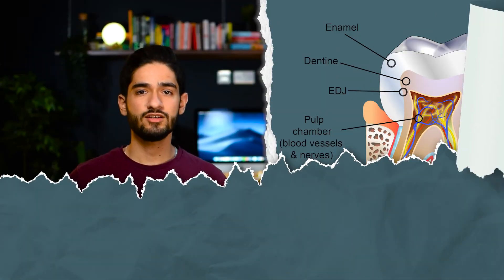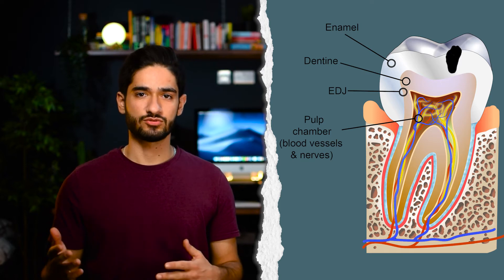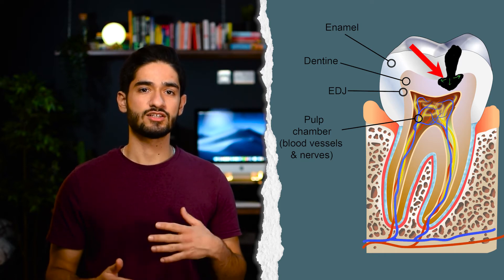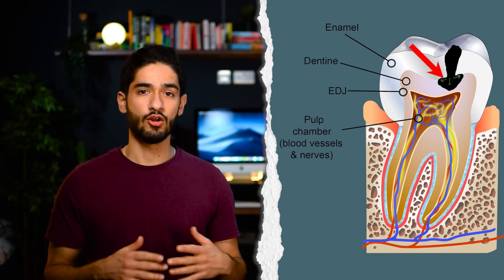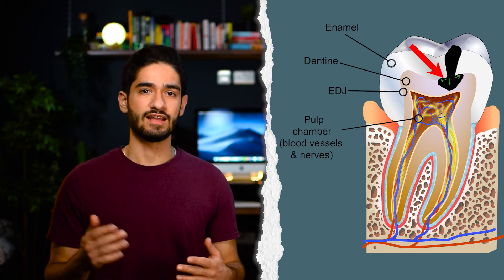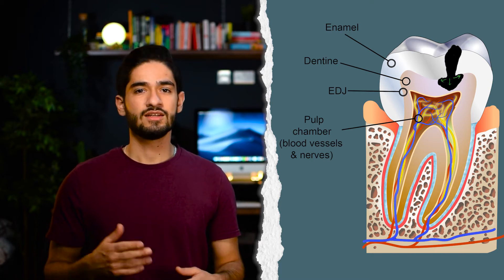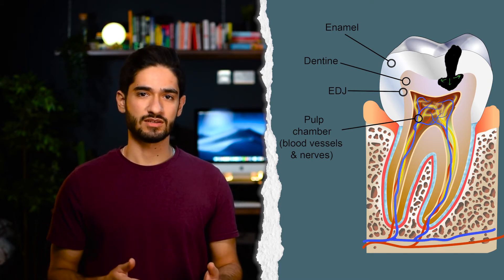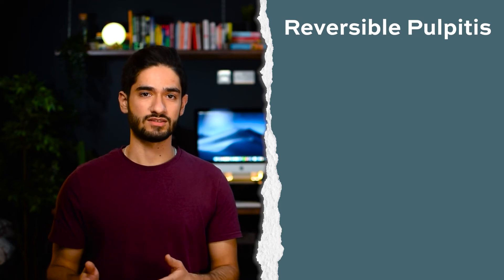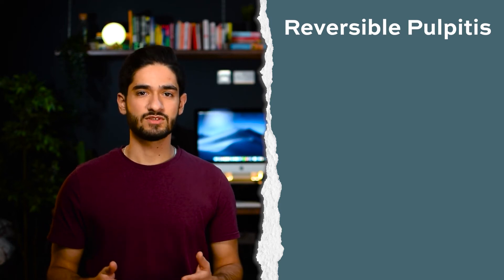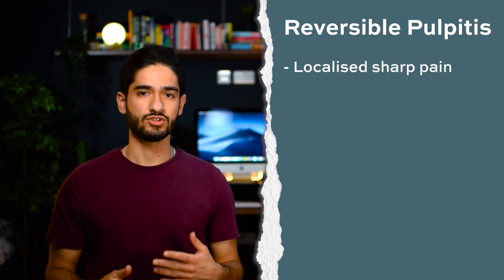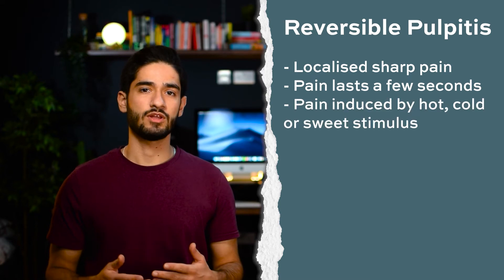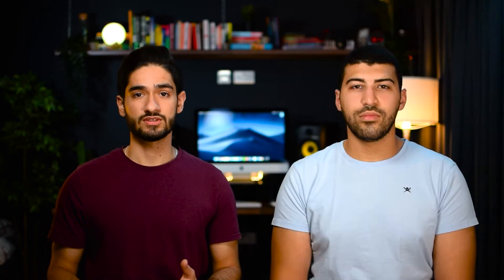The caries progresses into dentine without much lateral spread, but once it reaches the enamel dentine junction, it can spread laterally along this junction and down the dentinal tubules towards the pulp. This is where the patient may start experiencing symptoms of what we call reversible pulpitis. The standout symptoms are a localised sharp pain which lasts a few seconds and comes on when the patient has something hot, cold or sweet.